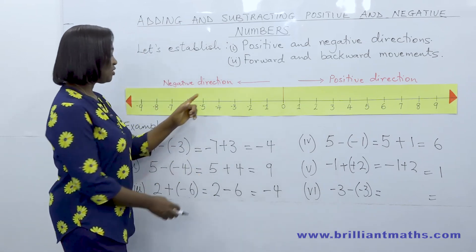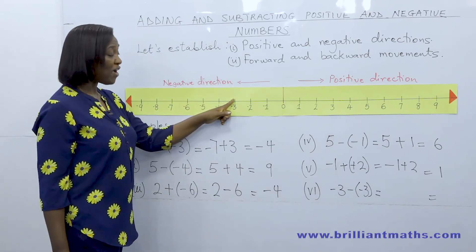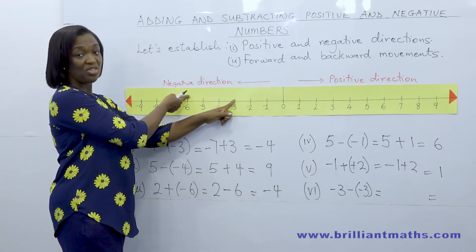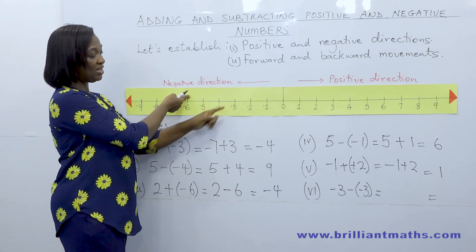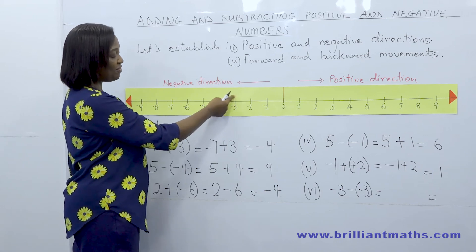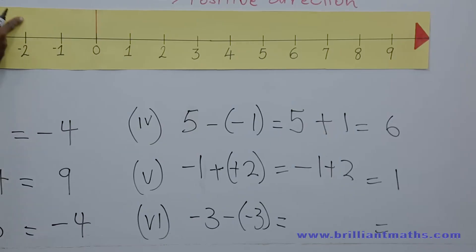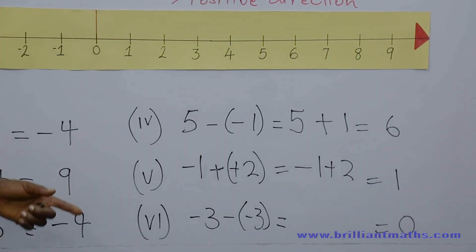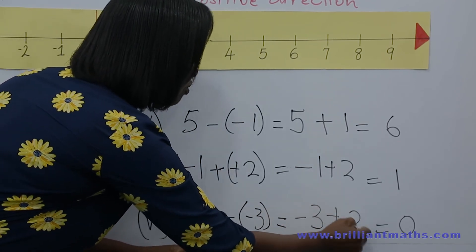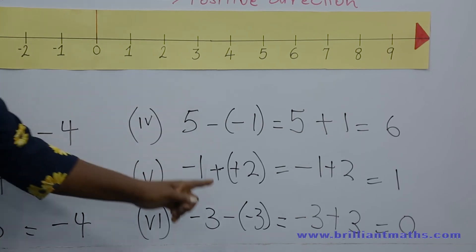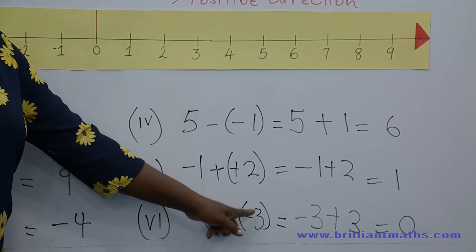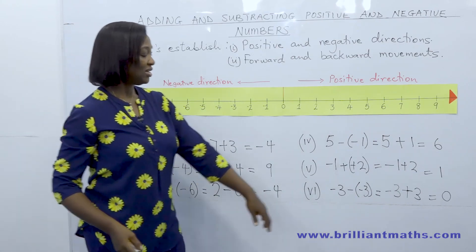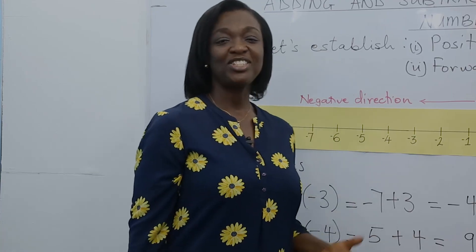Finally, we stand at minus three, face the negative direction, and go backwards three steps: one, two, three — that gives us zero. This is the same as minus three plus three. We have established that facing the negative direction and going backwards is actually going forward, so minus times minus is plus.